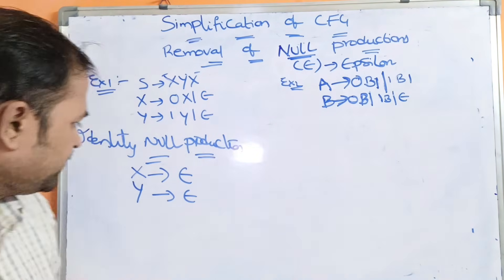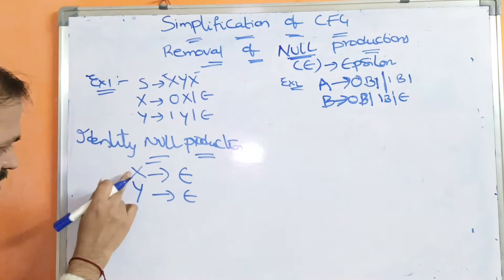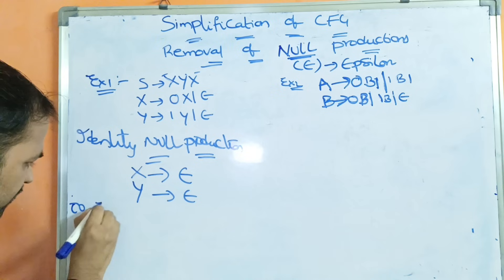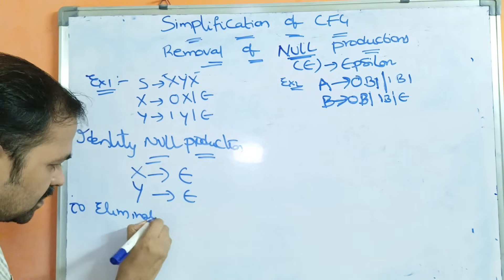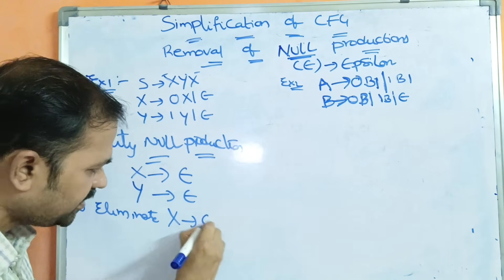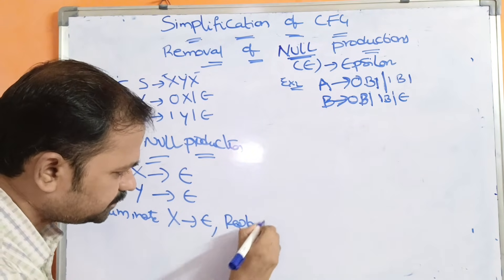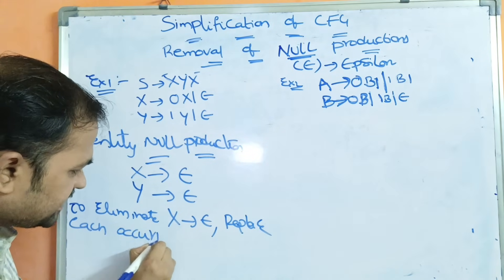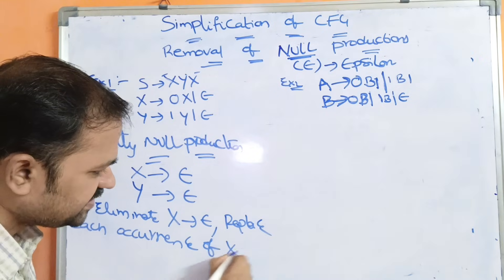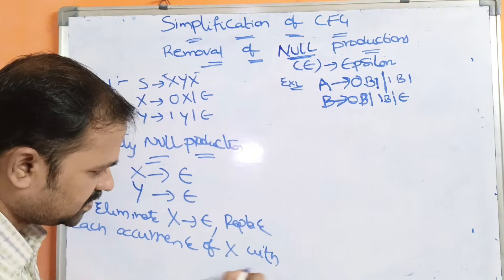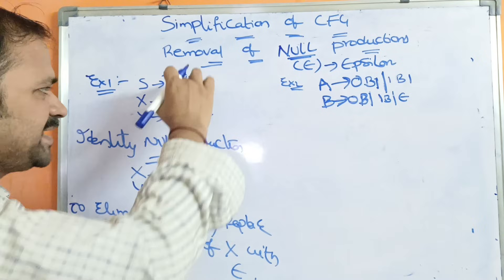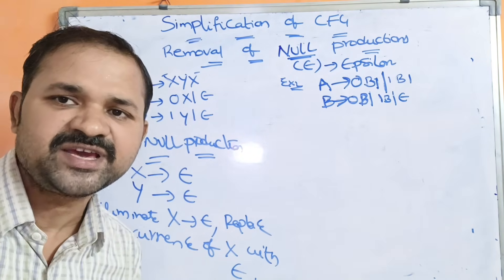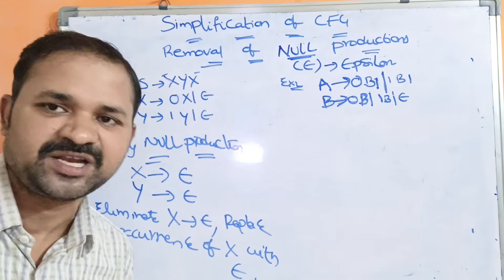First, let us eliminate X implies epsilon. To do this, we replace each occurrence of X in the right-hand side with epsilon. We search for X in the right-hand side of all productions and substitute epsilon in its place.